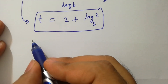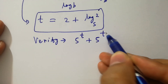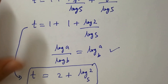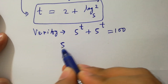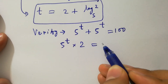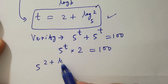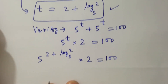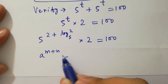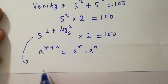In the next step I am going to verify the solution. Starting from 5 to the power t plus 5 to the power t equals 100, factoring gives 5 to the power t times 2 equals 100. Substituting t equal to 2 plus log 2 to the base 5, and using the rule a to the power m plus n equals a to the power m times a to the power n.